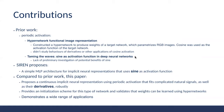On the contrary, this paper proposes a simple MLP architecture for implicit neural representations using sine as an activation function, and demonstrates a model that fits complicated signals as well as their derivatives robustly. They also provide an initialization scheme for this type of network, validate that weights can be learned using hyper networks, and demonstrate a wide range of applications.